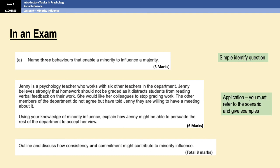The six marker is an application question. You have to refer to the scenario and give examples. It will be very tempting to just say 'Jenny needs to make sure she is consistent in her beliefs, which means she is not allowed to change her mind' — but that's not enough. You have to give examples of what Jenny's consistency might look like. Equally, if you're going to talk about Jenny accepting counter-arguments, you have to give an example of what flexibility for Jenny might look like — for example, suggesting that people only grade work once a term rather than stopping completely. If you don't refer to the scenario and don't give examples, you will drop a lot of marks.